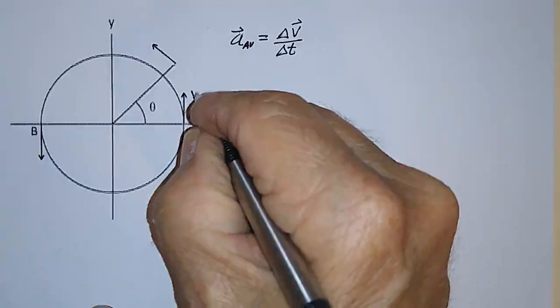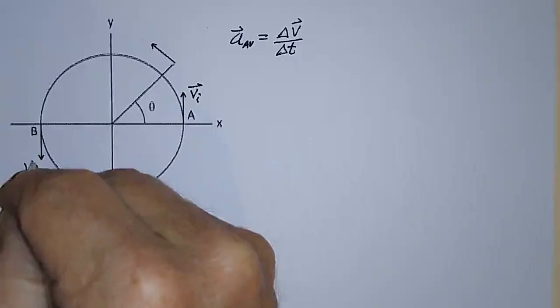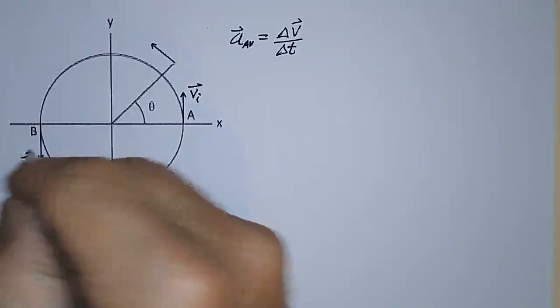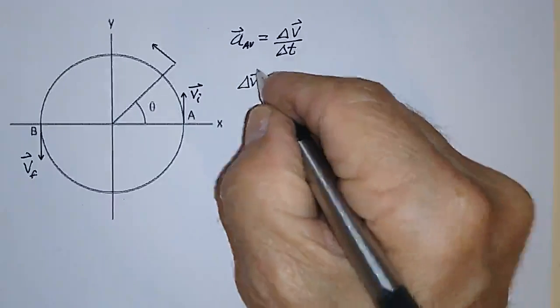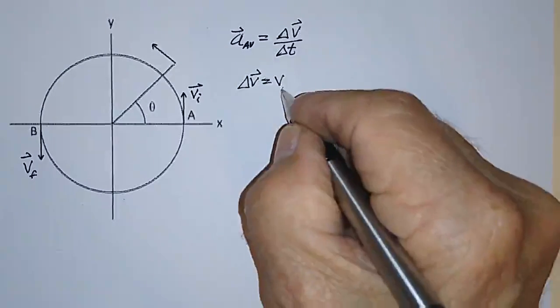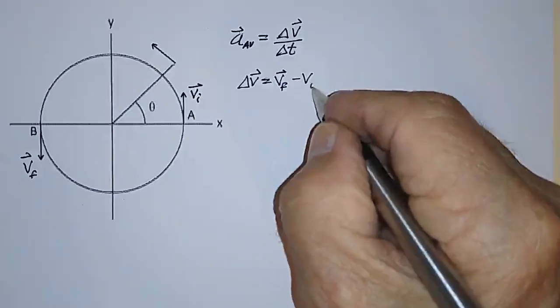Okay, and let's say this is the initial velocity, right here, and this is the final velocity, right here. So delta V then, delta V is equal to V final minus V initial.